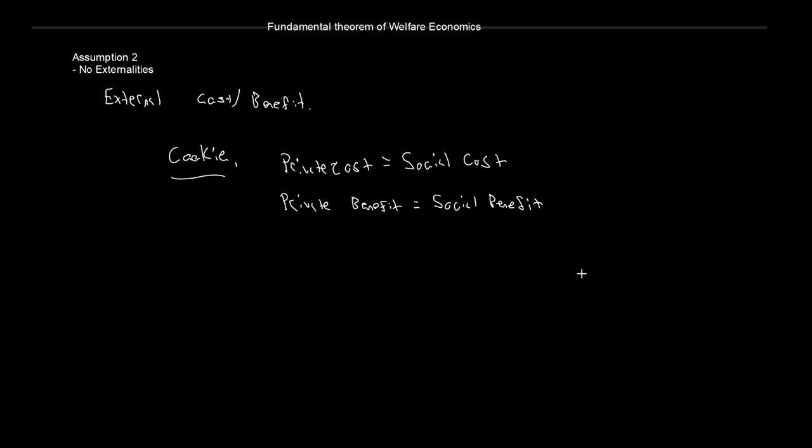But what happens if this isn't true? What happens if we do have external costs or benefits? We're going to focus on the cost side, because that's usually where it's more problematic. We'll look at two sides: a negative production externality and a negative consumption externality.